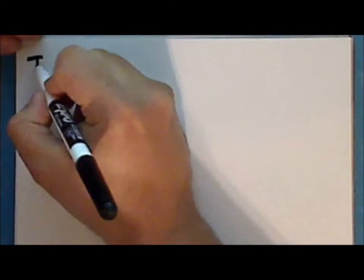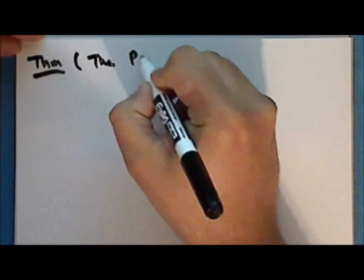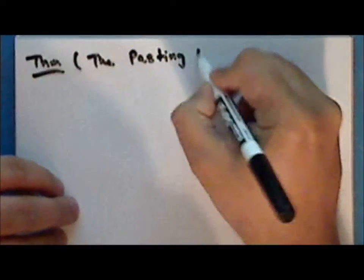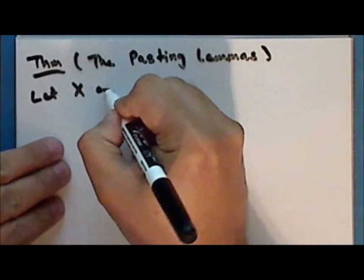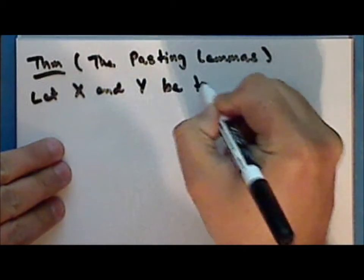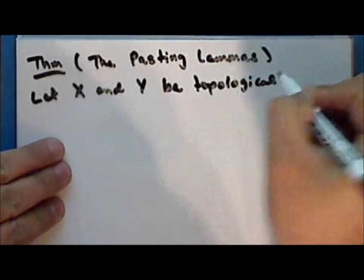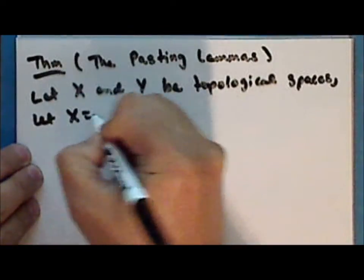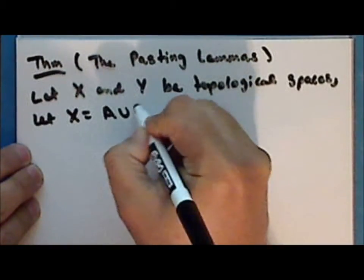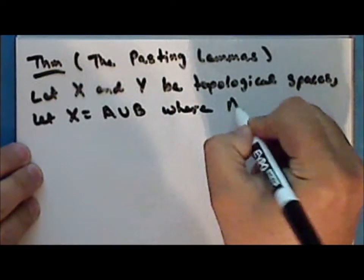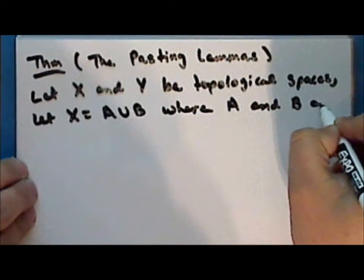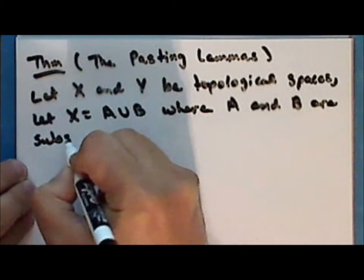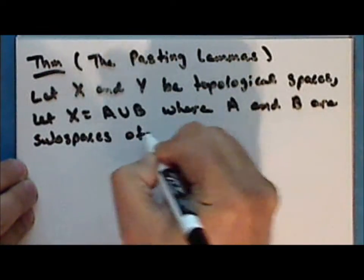Next we will prove as a theorem what are historically known as the pasting lemmas. Let x and y be topological spaces, and let x be the union of a with b, where a and b are subspaces of the space x.